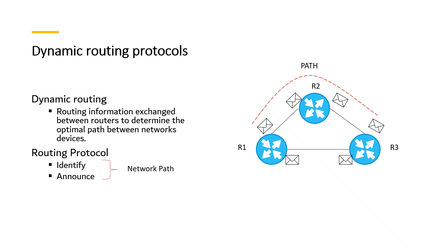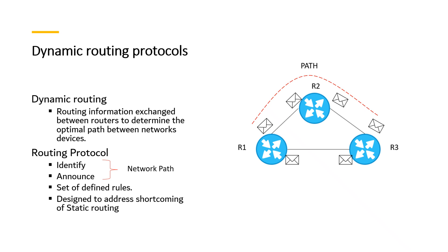Routing protocols are a set of defined rules used by routers to communicate between the source and the destination. Dynamic routing protocols were designed to address the shortcomings of static routing, such as the need for human involvement to make any changes, and because for large networks, static routing is not the optimal solution as it is very time-intensive.